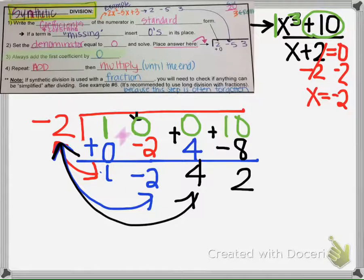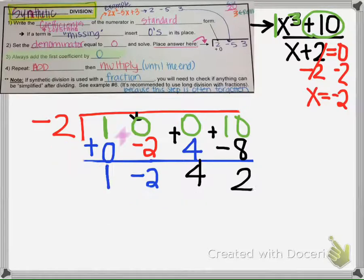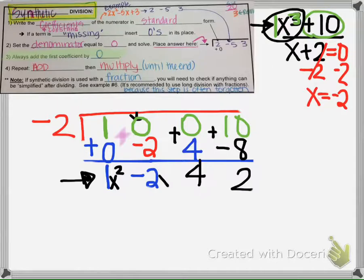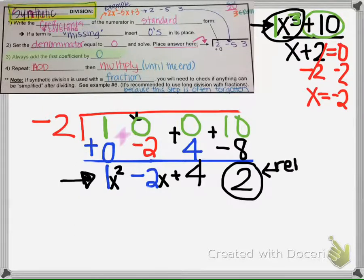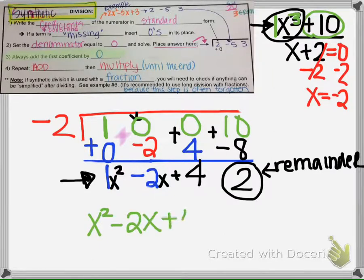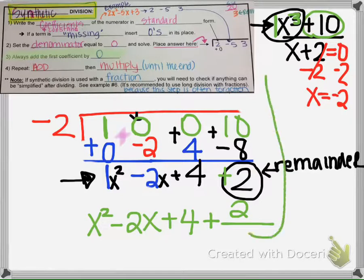Now let's write our answer. These numbers are the coefficients for the final answer. Since this was x cubed, this first coefficient gives x squared, the next gives x, and the next is just the constant plus 4. The last number is always the remainder. So our answer is x squared minus 2x plus 4, and since the remainder is positive 2, we write plus 2 over (x plus 2).